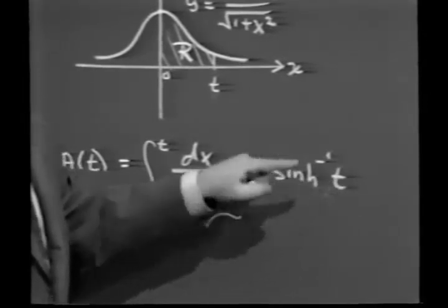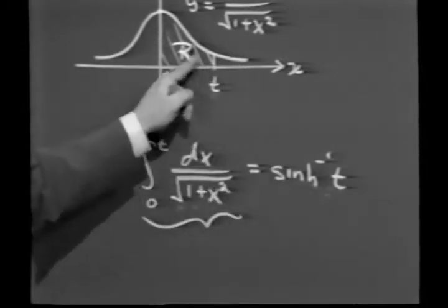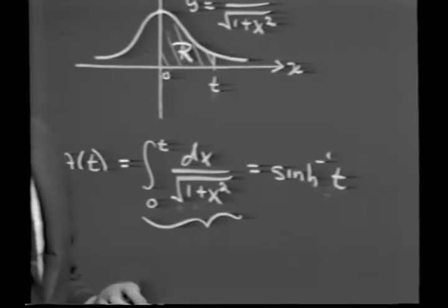In other words, e to the 1 minus e to the minus 1 over 2. In other words, notice how e sneaks in to a problem which basically doesn't seem to have any relationship to e.